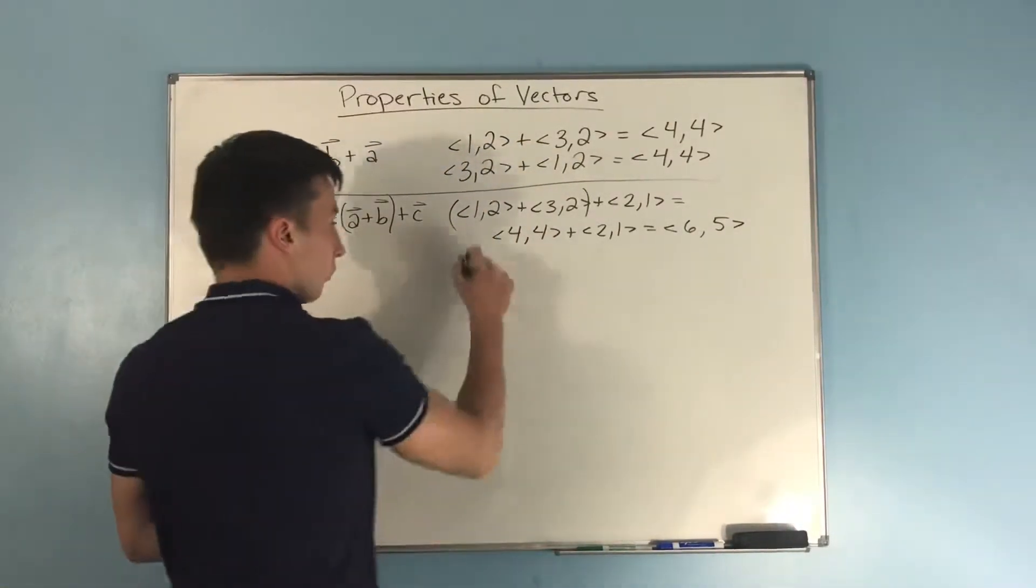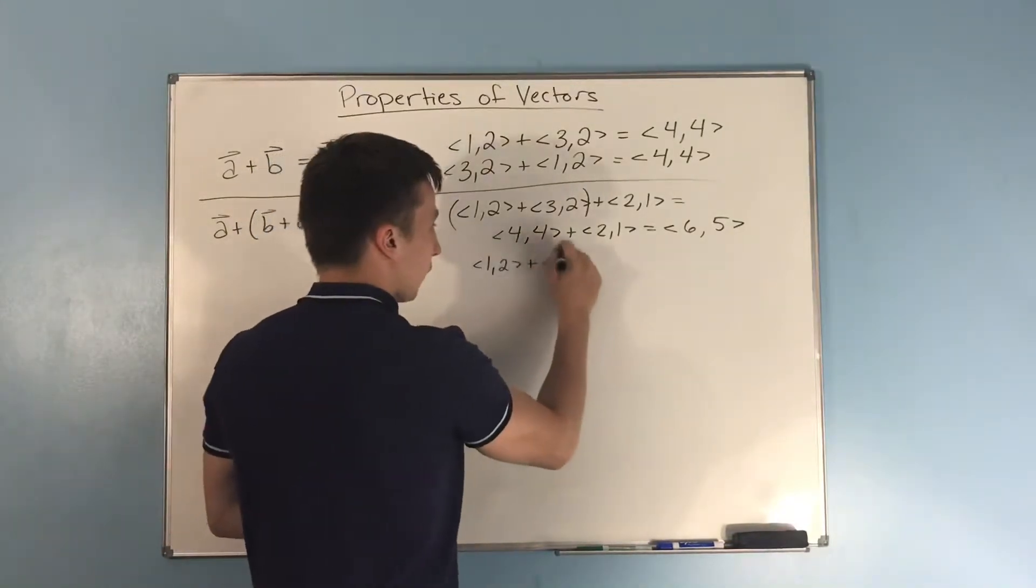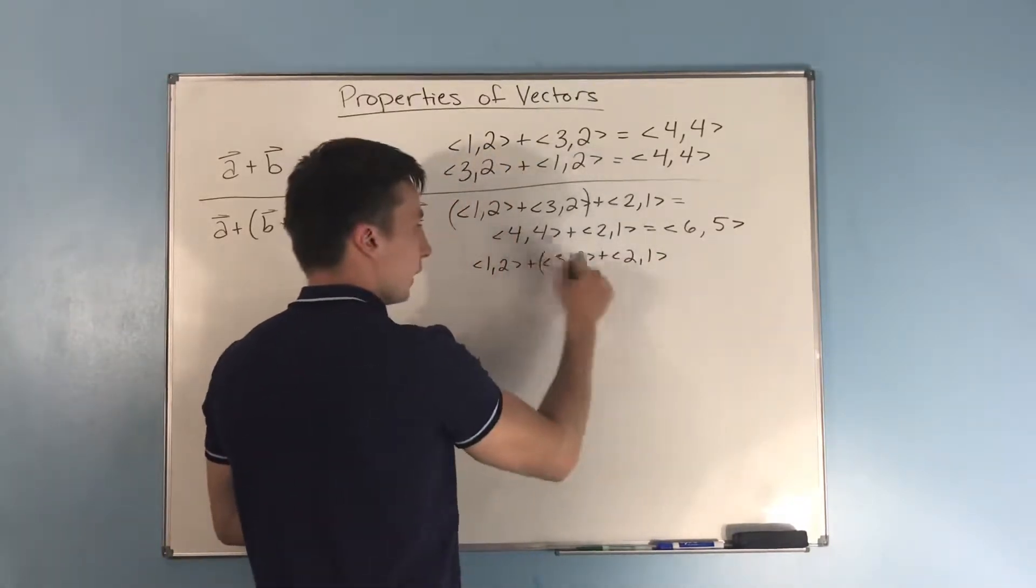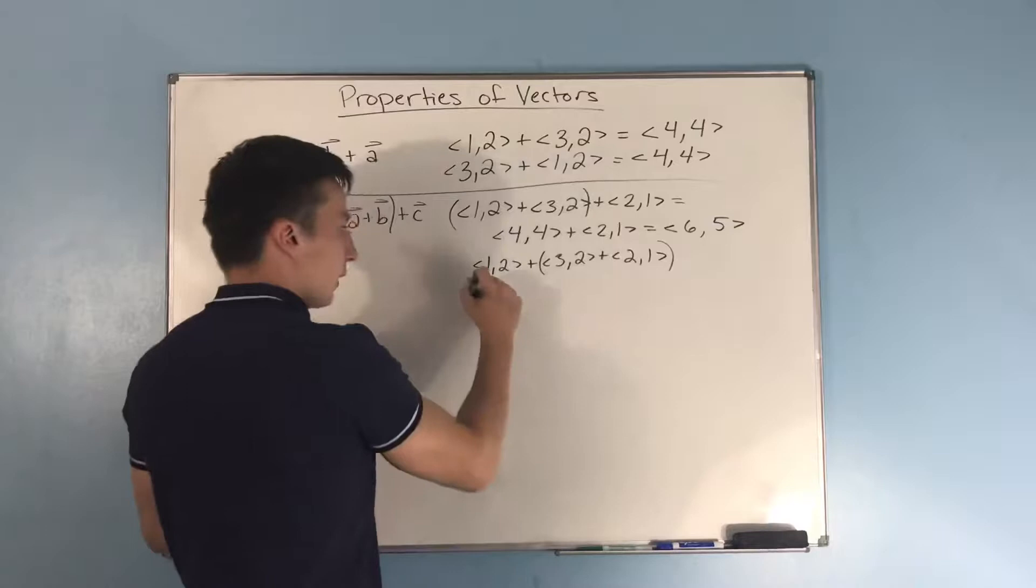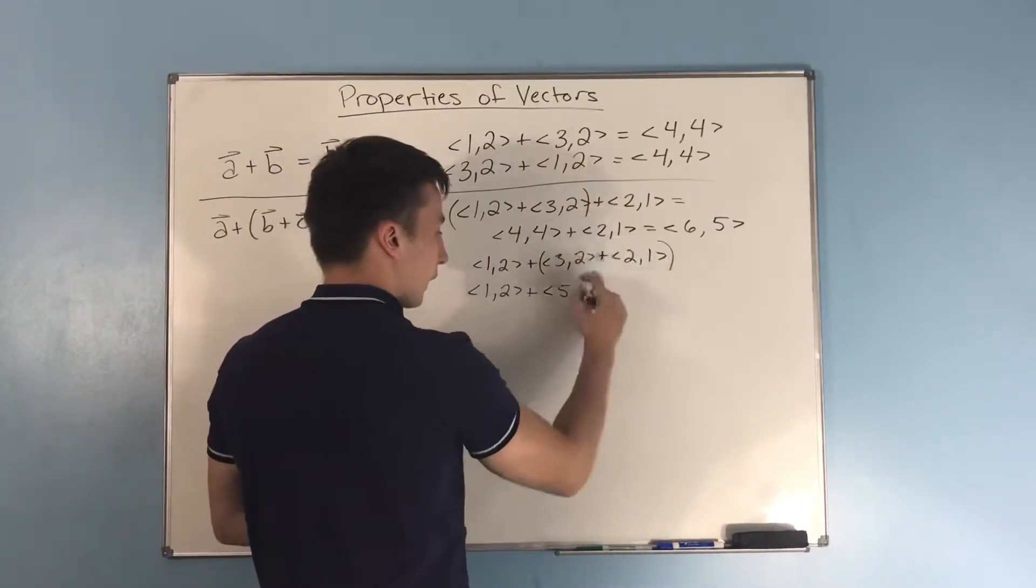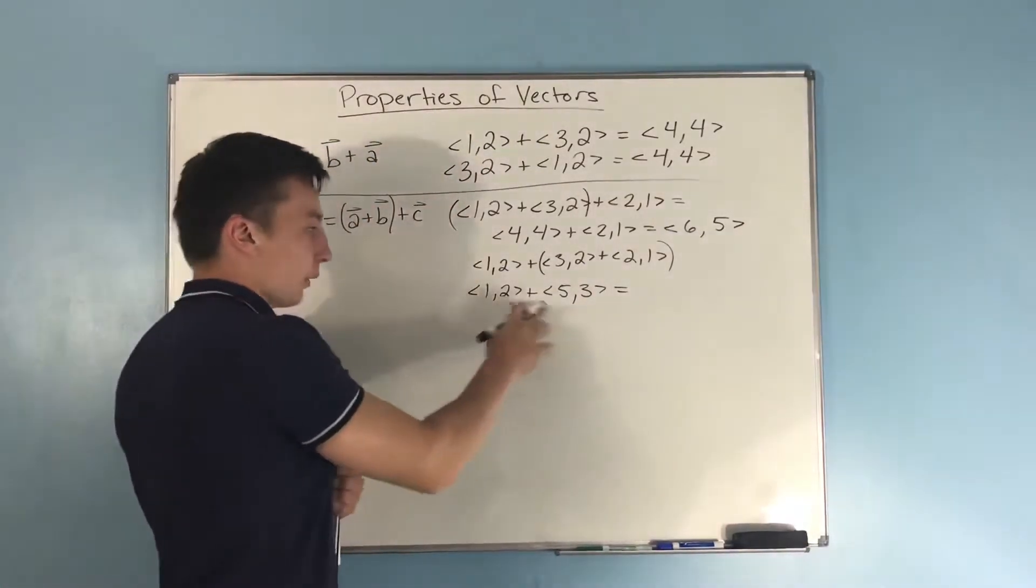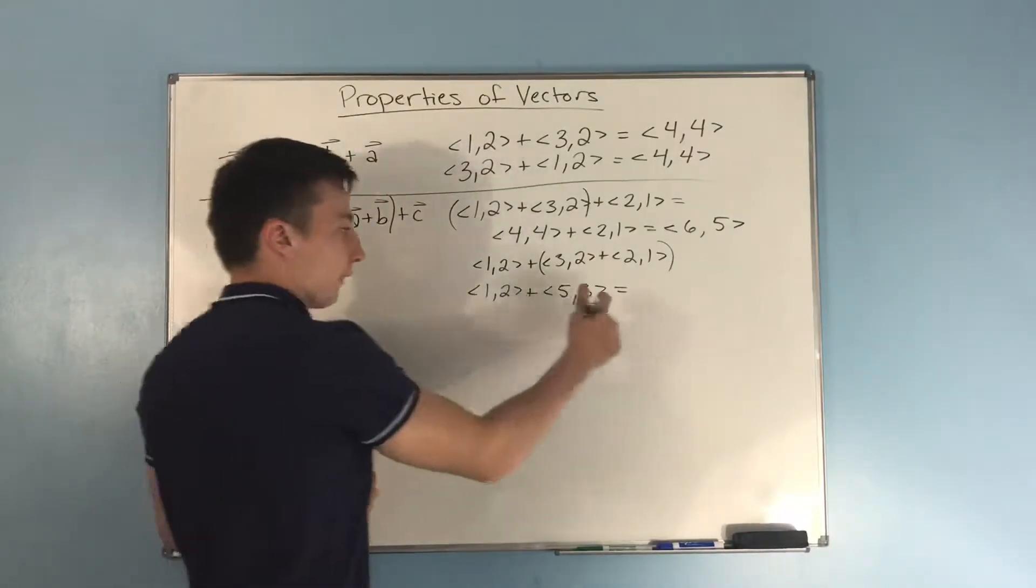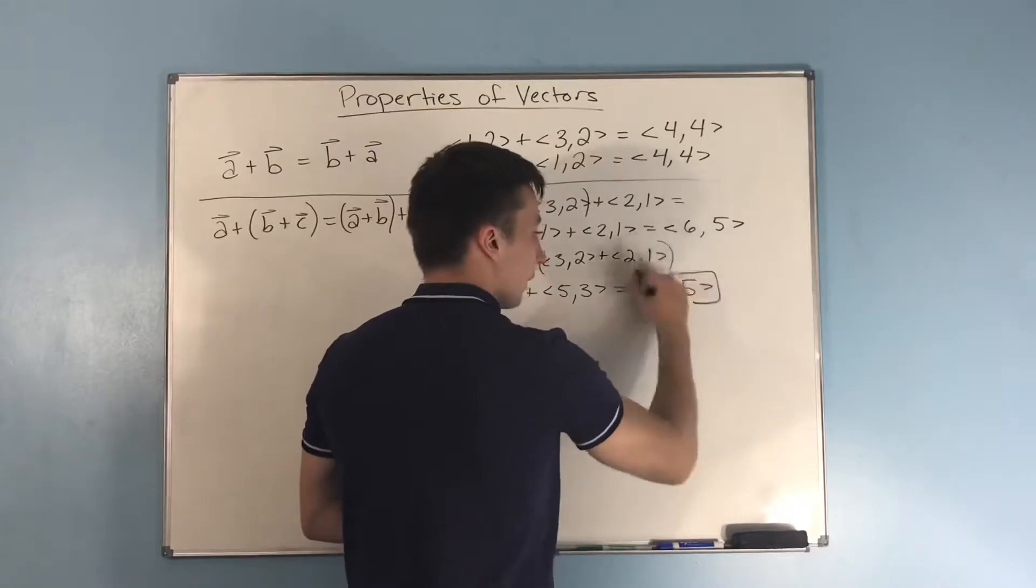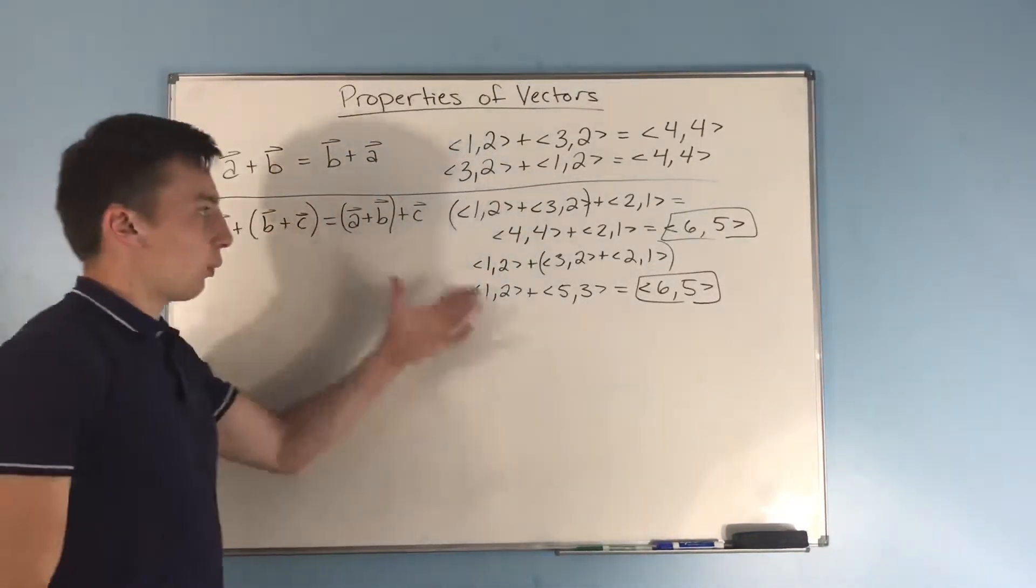Now also, if we did 1,2 plus 3,2 plus 2,1, and we did these ones first, well that's the same thing as 1,2 plus 3 plus 2 is 5, 2 plus 1 is 3. And 1,2 plus 5,3 is 1 plus 5 is 6, and 2 plus 3 is 5. So we get the same exact answer, no matter in what order we add the vectors.